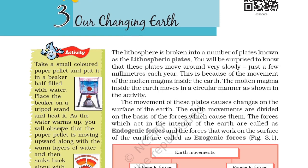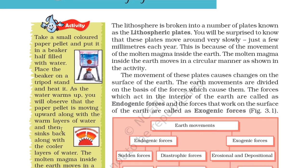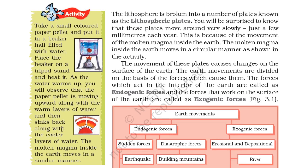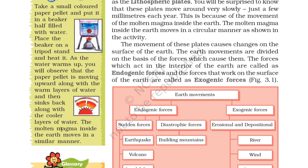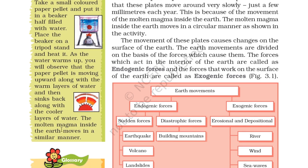The molten magma inside the earth moves in a circular manner, as shown in the activity. Take a small colored paper pellet and put it in a beaker half filled with water. Place the beaker on a tripod stand and heat it. As the water warms up, you will observe that the paper pellet moves upwards along the warm layer of water and then sinks back along with the cooler layer of water. The molten magma inside the earth moves in a similar manner.